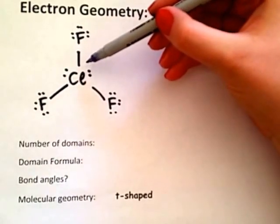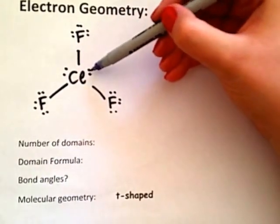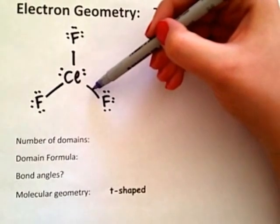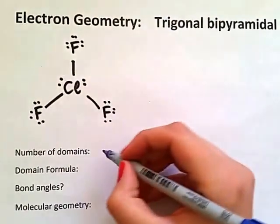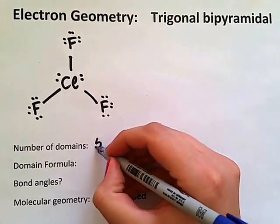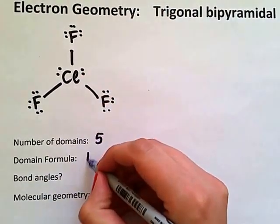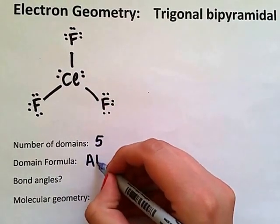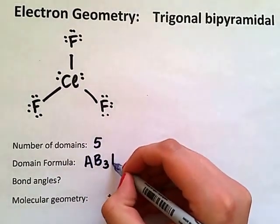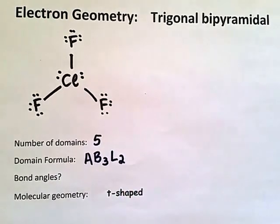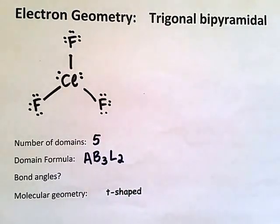Around the central chlorine atom there are one, two, three, four, five domains. One, two, three of which are bonding domains, two of which are lone pair domains.